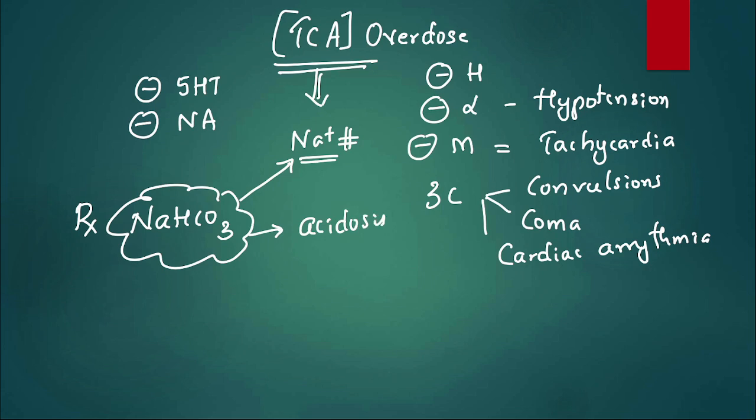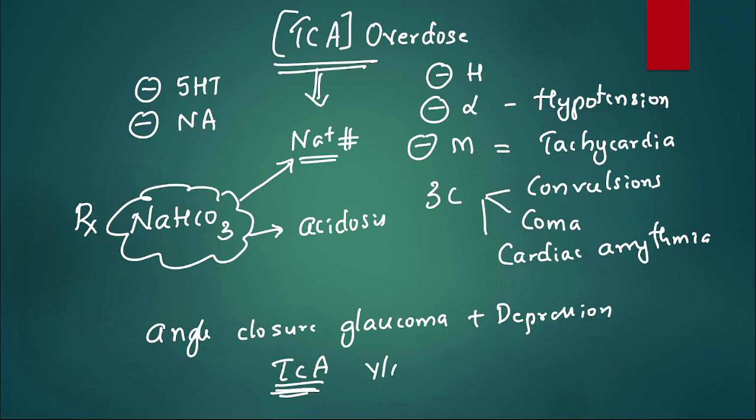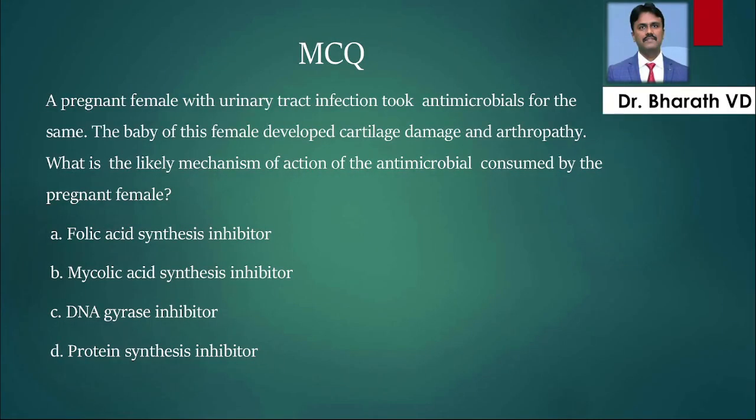Now one more question: suppose a patient has angle closure glaucoma and he is having depression. Can we prescribe TCA? Coming back, the treatment for TCA overdose is sodium bicarbonate. It can cause three C's: convulsions, coma, and cardiac arrhythmias. How do I prevent arrhythmias? By using sodium bicarbonate. How do I treat convulsions or seizures? By giving benzodiazepine like lorazepam or diazepam. Moving to the third MCQ.